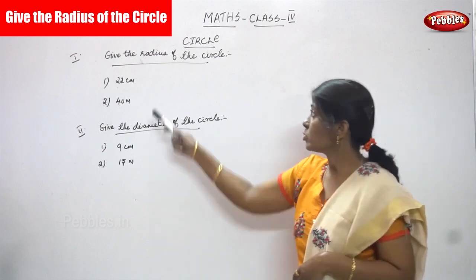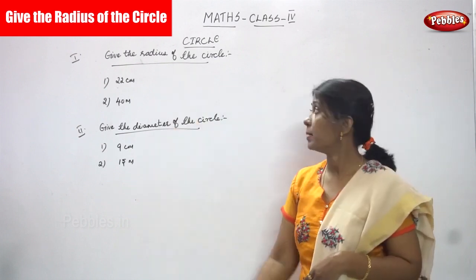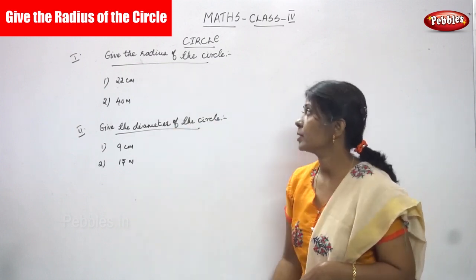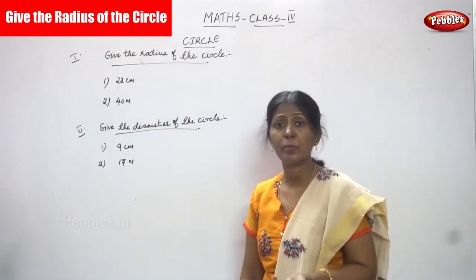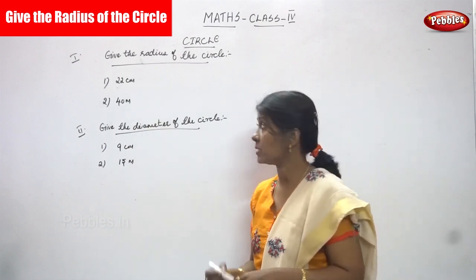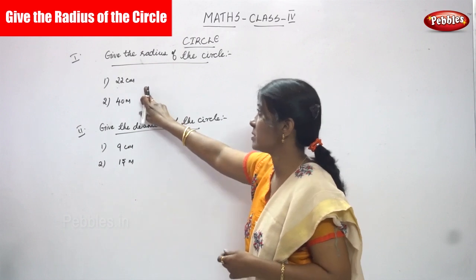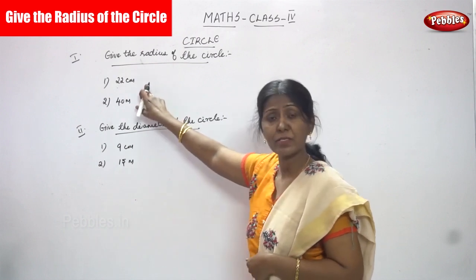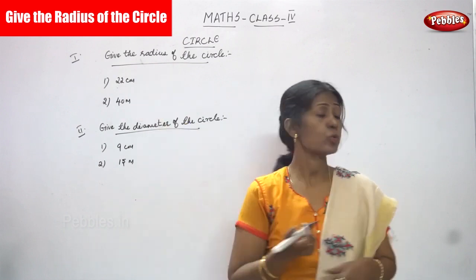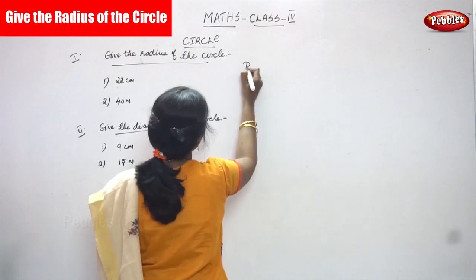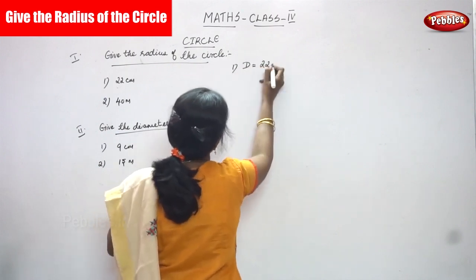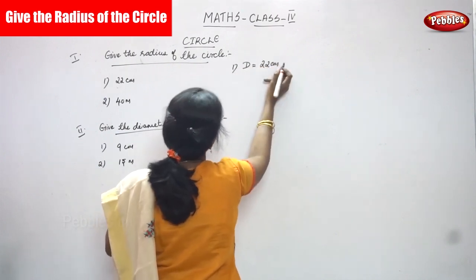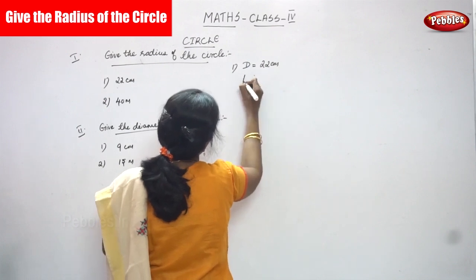Now, we are going to solve some problems. Give the radius of the circle. The question is 22 cm. You know what is the formula of radius? That is, it is a diameter. Given the diameter, you have to find out the radius. D is equal to 22 cm. The formula is radius — you have to find the radius.